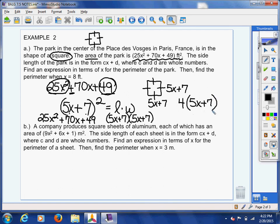Why don't we just multiply one side times 4, and that will give me the perimeter. So, then the perimeter is 20x plus 28.